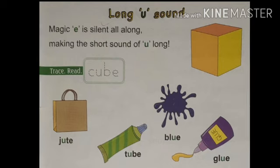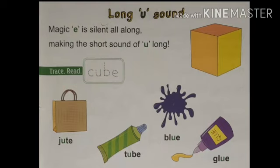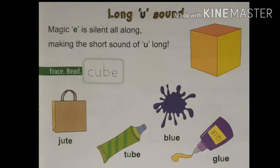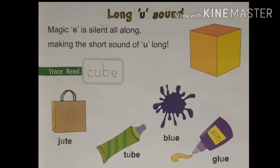Another word is B-L-U-E, blue. Blue is a name of a color. Color का नाम है blue. Now another word is G-L-U-E, glue. Glue means gond, which is used to stick things. किसी भी चीज को जैसे paper वगैरा — चिपकाने के लिए use करते हैं, उसे बोला जाता है glue.